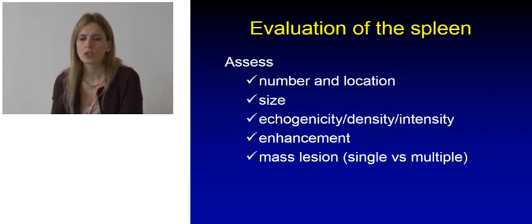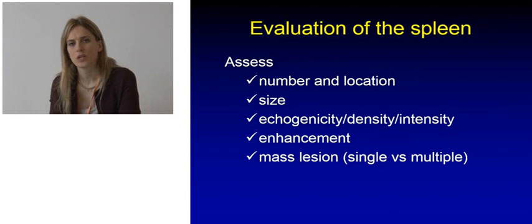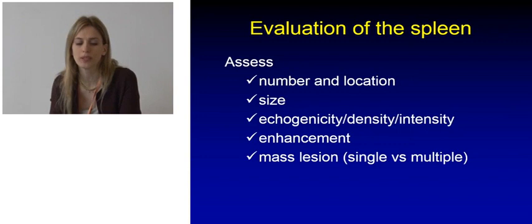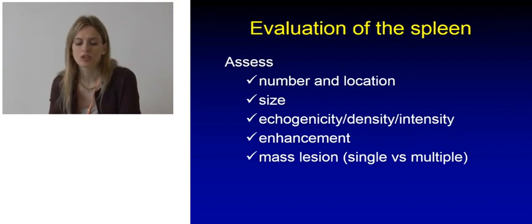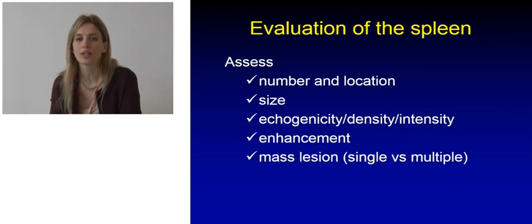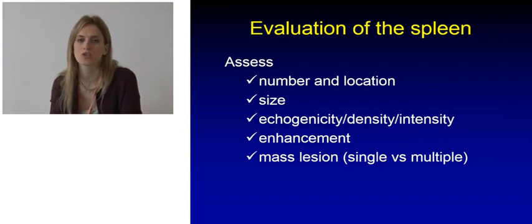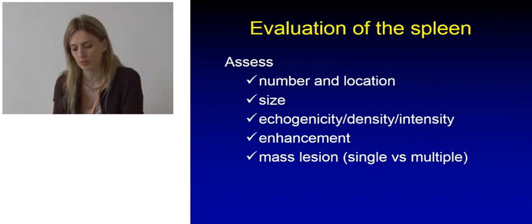What do we have to bear in mind when evaluating the spleen? There is a list of things to assess: the number and location of the spleen or spleens; its size; the echogenicity, density, or intensity of the parenchyma; its enhancement; and whether there are mass lesions, and if so, whether there is one or multiple.